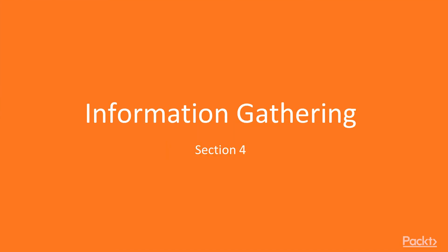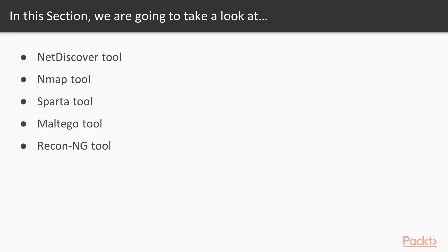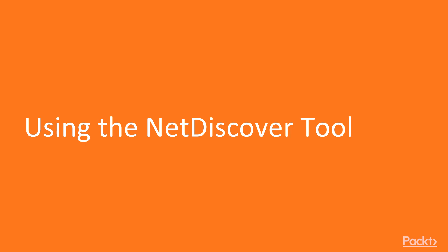Hello and welcome to section 4: Information Gathering. In this section we are going to look at various points. First, we will learn about how to use the NetDiscover tool for gathering information, then we will use the Nmap tool as well as the Sparta tool for scanning ports, and we will also use the Maltego tool to gather information about various kinds of systems.